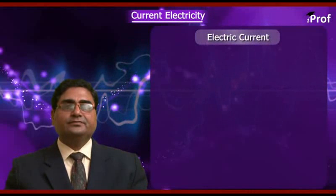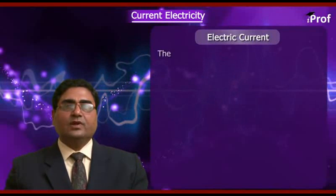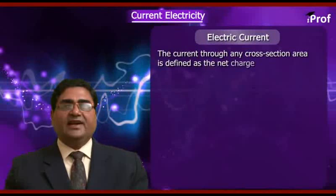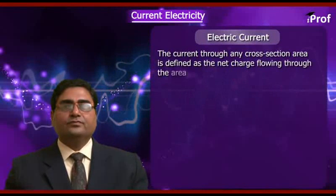Let us study a new topic: current electricity. In this topic, we are first starting with electric current. Define electric current: the current through any cross-section area is defined as the net charge flowing through the area per unit time.